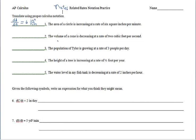Number two: the volume of a cone is decreasing at a rate of — we stop right there. The variable that represents volume is V, and we're talking about a rate of change with respect to time, so dV/dt equals. Now notice that the volume is decreasing, so the correct notation would be negative 2 cubic feet per second, indicating units of measure: cubic feet per second.